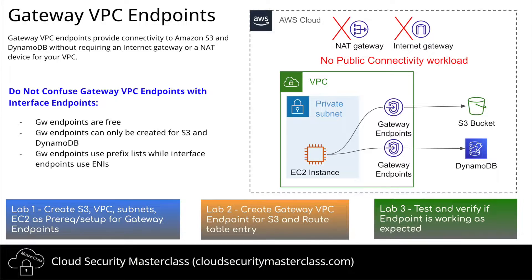There are two kinds of endpoints in VPC: gateway endpoints and interface endpoints. Let's see some of the differences. Gateway endpoints are free to use — there is no charge for people to use those — while interface endpoints do have a charge for usage.